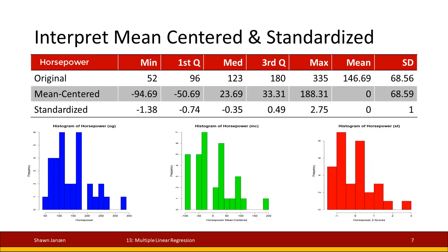Looking at the summary statistics and histograms, the top row shows the original, followed by mean centered, followed by standardized. The original and mean centered have the same standard deviation, but the original has a mean of approximately 147 while the mean centered has a mean of zero. Comparing mean centered and standardized, they both share a mean of zero, but standardized now has a standard deviation of one. The minimums, maximums, and medians are all re-shifted accordingly.